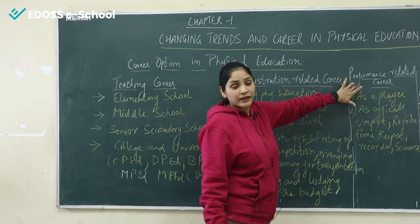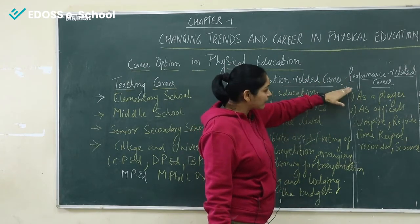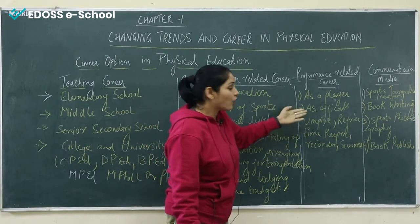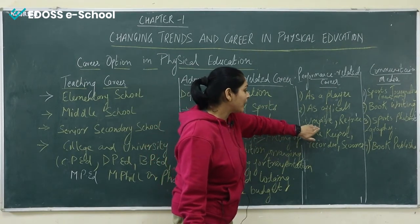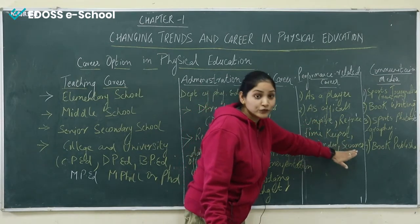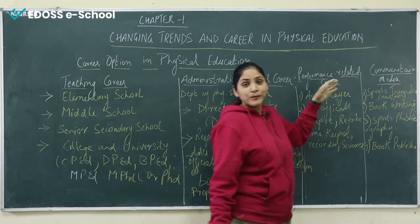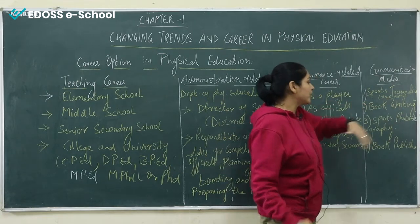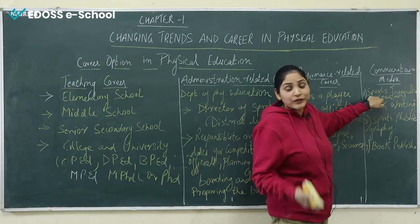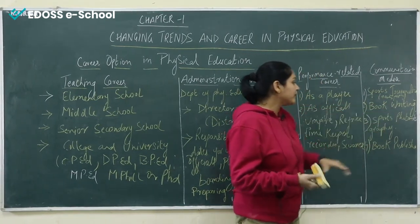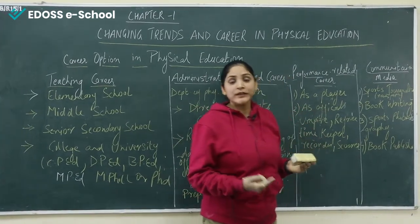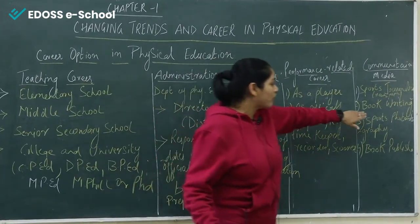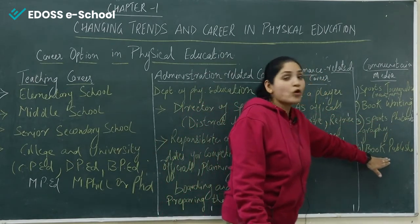After that, performance-related career. If you want to make a career in the field of physical education, you have the good option of performance-related careers. In this option, you can choose a career as a player or as an official — you can apply for roles such as umpire, referee, time keeper, recorder, scorer, and many more options. After that, communication media: if you want a career in communication media, there is the sports journalism option, in which you can work in newspapers, book writing covering subjects like sports sociology, sports management, sports training, sports biomechanics, and more. There is also sports photography and book publishing.